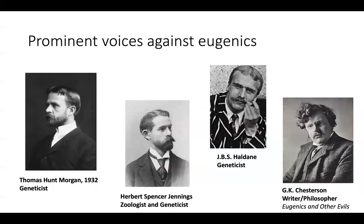It's important to note that not all geneticists were eugenicists. Thomas Hunt Morgan, Herbert Spencer Jennings, and JBS Haldane were all among vocal anti-eugenicists. Chesterton, a writer and philosopher, famously stated, quote, every tramp who is sick, every laborer who is shy, every rustic who is eccentric can quite easily be brought under such conditions as were designed for homicidal maniacs. That is the situation, and that is the point. We are already under the eugenicist state, and nothing remains to us but rebellion.